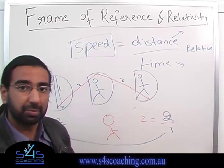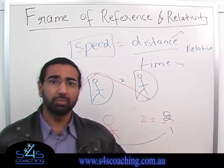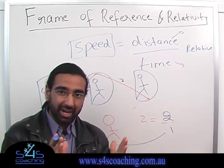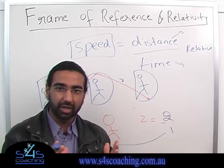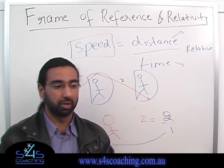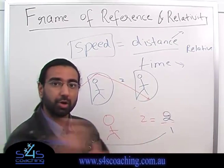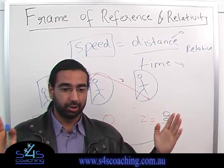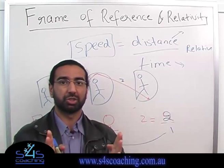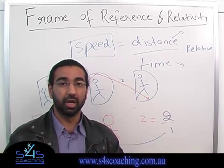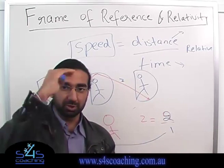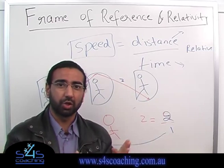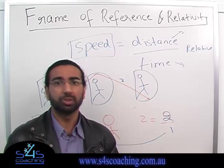What happens is as you're moving, the length of a moving object will contract in the direction of the motion. So if I'm going horizontally, I will sort of squish horizontally. Vertically, I will still remain exactly the same. Horizontally, I will squish.